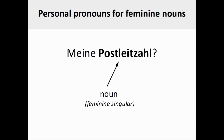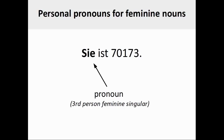The grammatical gender of the German noun Postleitzahl, or postal code, is feminine and the number of the noun is singular. If you were to see the definite article of the noun here, it would be die. Since Postleitzahl is a feminine singular noun, the matching personal pronoun needs to be used: sie (feminine, third person singular).